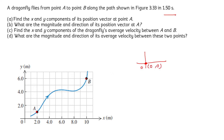Now, as we know, we can write the value of the x component at this point, which is equal to 2, and the value of the y component can be written as 1. So we can write the coordinates of point A, and these are going to be the x and y components of the position vector at point A.